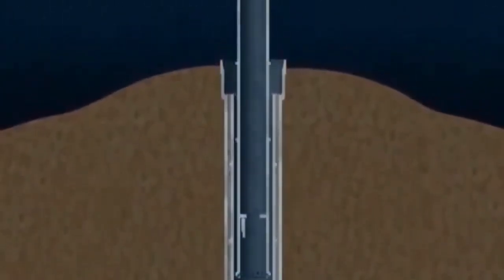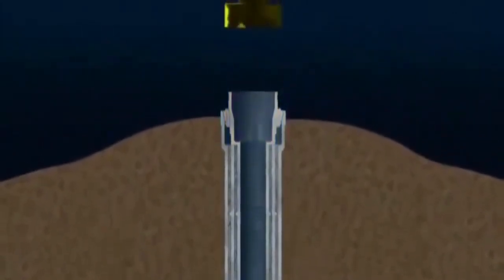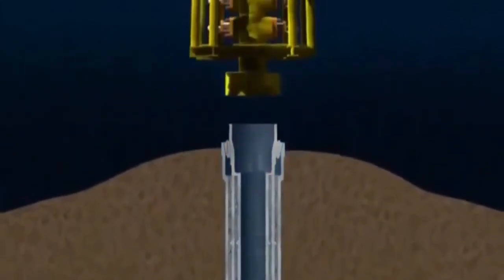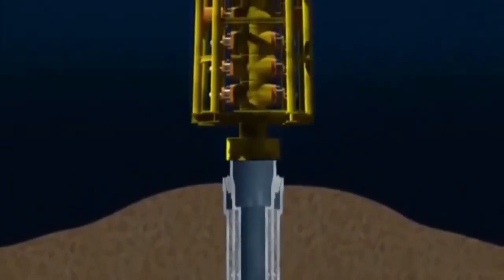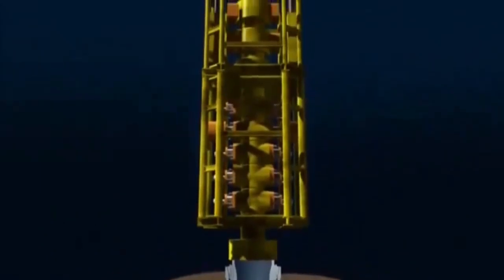This first casing run has an attached wellhead. A blowout preventer, or BOP, a robust set of valves that can shut in the well even if the drill string is down the hole, is then lowered and locked onto the wellhead.